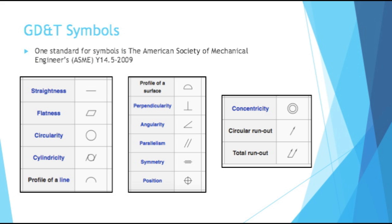You have profile of a line, which is talking about a curve. You have profile of a surface, which is talking about a whole curved plane. You have perpendicularity, looking for two things to be 90 degrees. You have angularity, for any other angle you want to specify. Parallelism, symmetry, position — you see that a lot with circles. Concentricity, so how concentrated is the circle. Circular runout and total runout. Runout has a lot to do with when you're turning a circular object, how much the diameter varies.